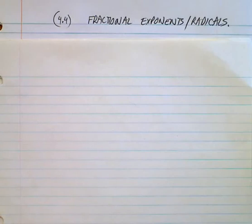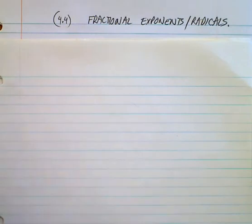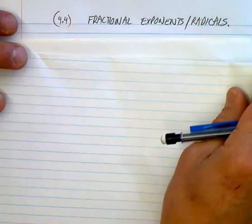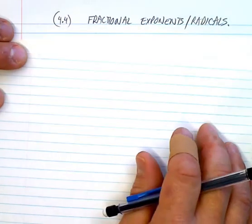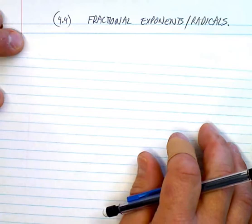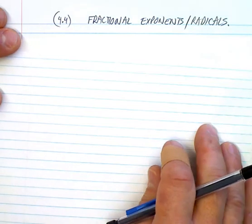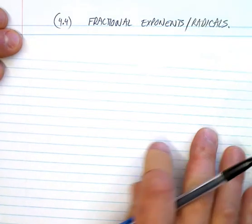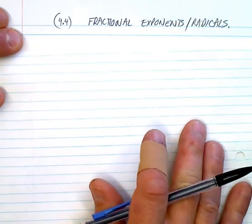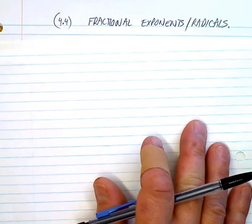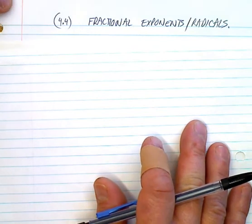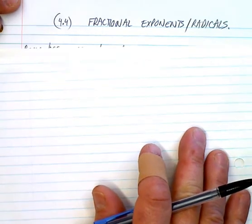Here we are again, ladies and gentlemen — section 4.4, Fractional Exponents and Radicals. Now, this might make some of you a little queasy to begin with, but again, it's all a process: seeing the patterns, recognizing the patterns, doing them enough, and it'll become easier and easier.